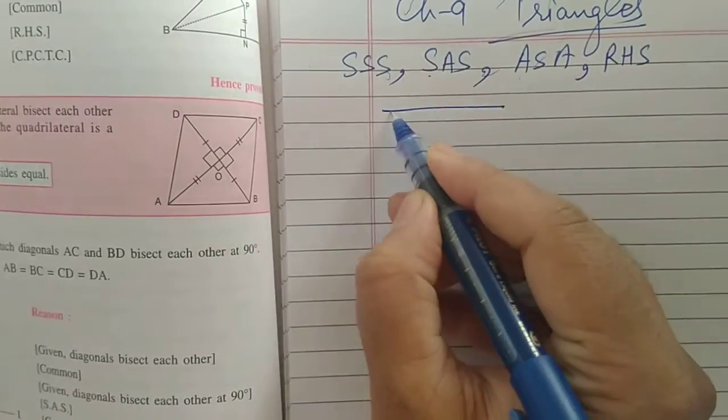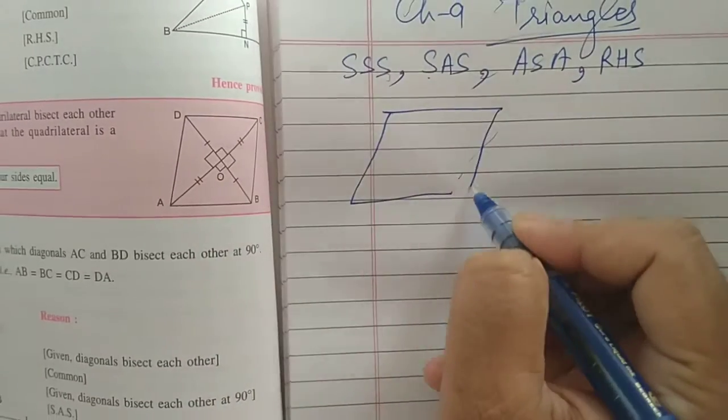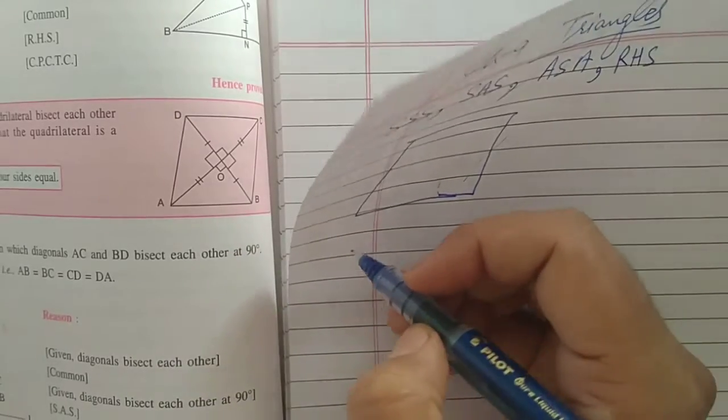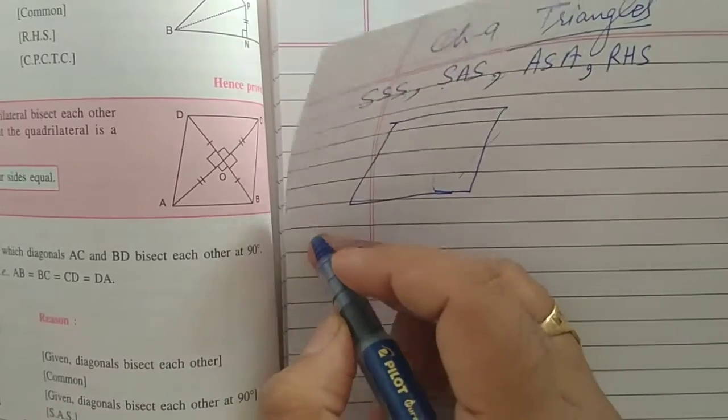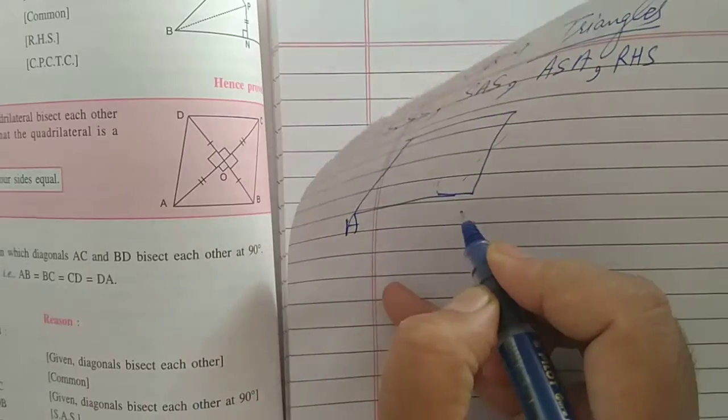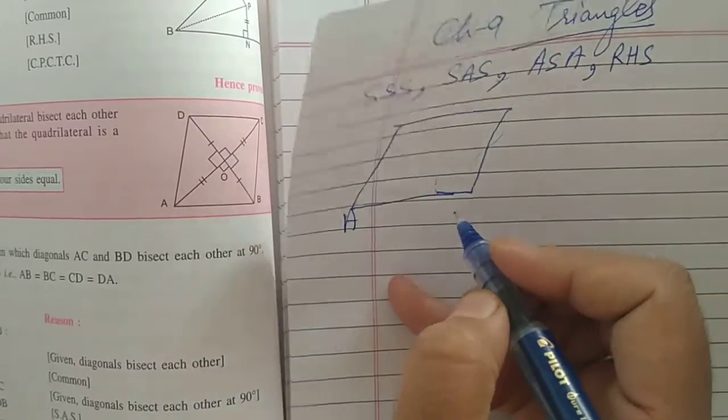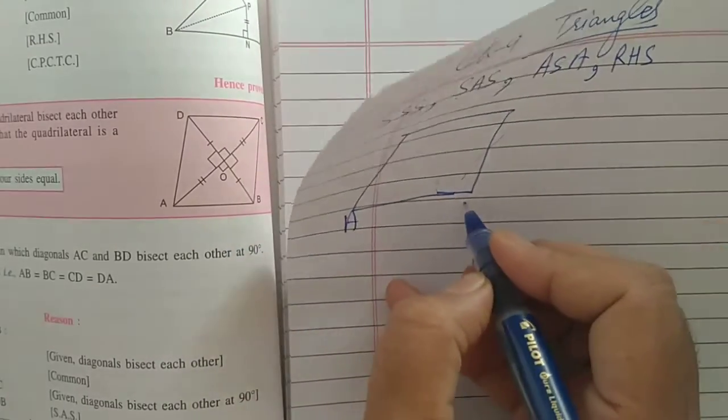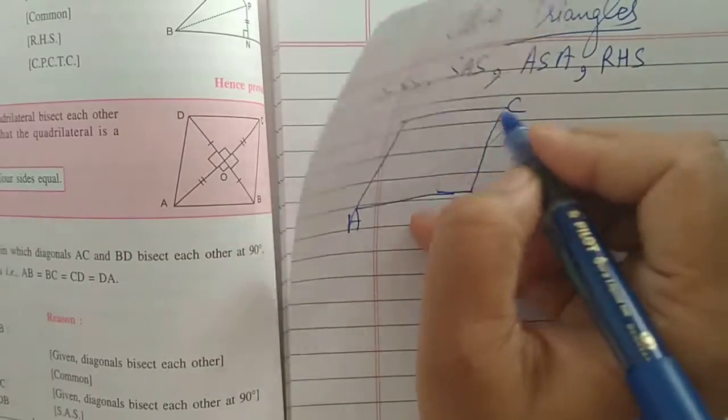Suppose, this is a quadrilateral. Figure is very very important in this chapter and all the chapters of geometry. Its name, you can give by yourself, you can write P, K, O, R, S. I am going to write A, B, C, D.